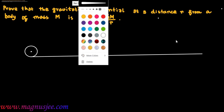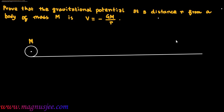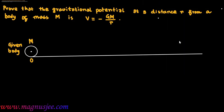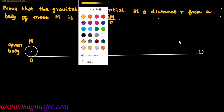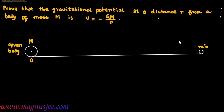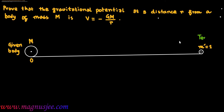In the diagram, capital M is the mass of a given body at the point O. This is the given body of mass capital M. We consider a test body of unit mass which is at the point D, that is at infinity — at an infinite distance from the given body. The distance of point D from point O is infinity, x equal infinity.